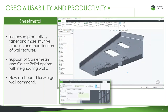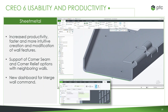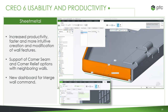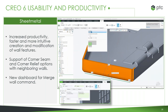Here we have updates to sheet metal, mostly having to do with increased productivity. It's much more intuitive for creating walls, and this includes a lot of instant options — it works well with creating corners, building out different seams and reliefs. As we're building everything out, we see instant previews right on the model. We also have a new dashboard for creating and merging walls, all working in the beautiful new interface.